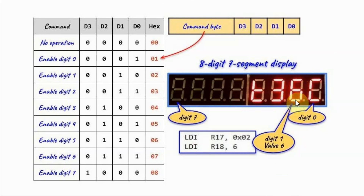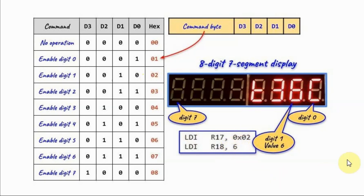As an example, let's say we want to display 6 on digit 1. The first byte is the command byte, so we need to send 0x02. And then the second byte is the data byte, which will be the value 6.